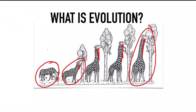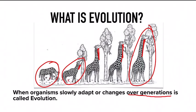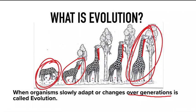So if you are asked what is evolution, this is the answer: when an organism slowly adapts or changes over generations, it is called evolution. Please remember, this change or adaptation takes a very long time and happens over generations — meaning within families. Little changes come from parents to children, then to grandchildren, then to great-grandchildren.